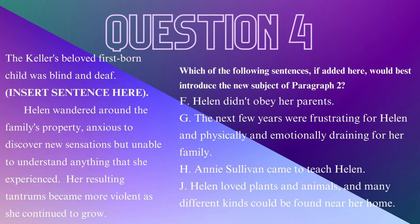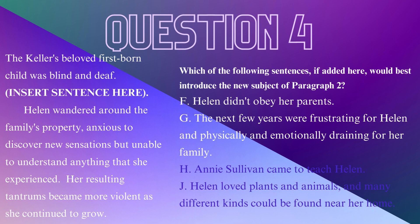Question 4. This question asks which of the following sentences, if added here, would best introduce the new subject of paragraph 2. This paragraph is more about explaining how a loss of hearing and vision would result in frustration, and not being able to communicate one's needs would lead to outbursts or violent tantrums. Choice G — 'The next few years were frustrating for Helen and physically and emotionally draining for her family' — would be the best choice as a good transition from her illness as a baby to childhood.